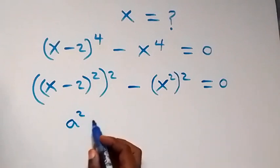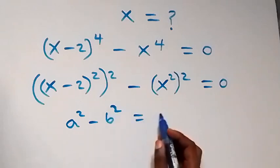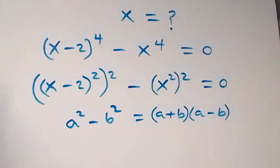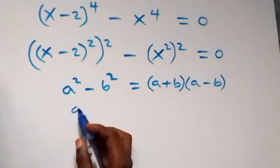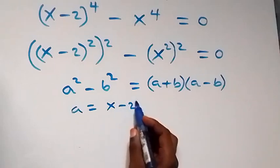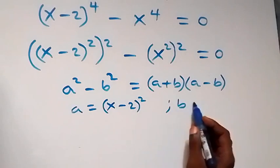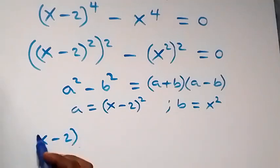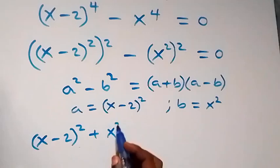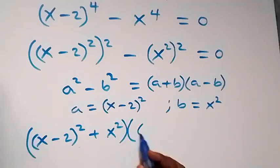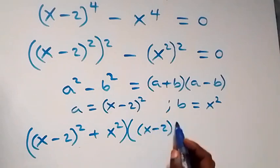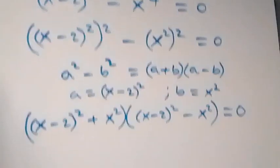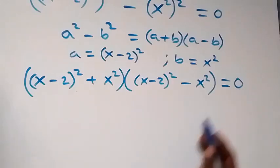We apply the difference of two squares, which is a squared minus b squared, written as (a plus b) times (a minus b). Here, a is (x minus 2) squared and b is x squared. So this becomes: [(x minus 2) squared plus x squared] times [(x minus 2) squared minus x squared] equals to zero.